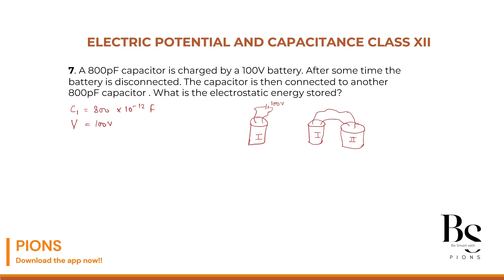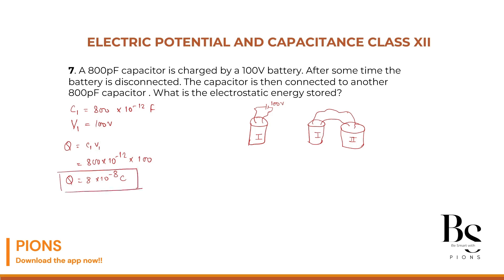Charges will flow because from our earlier knowledge, if two charged objects are in contact with each other, something will happen. Let's first find the initial potential. V1 is the voltage across the first capacitor in the first instant when it is connected to the battery. The charge stored is Q = C1 × V1, which is 800 × 10⁻¹² × 100 = 8 × 10⁻⁸ coulombs. This is the initial charge stored.